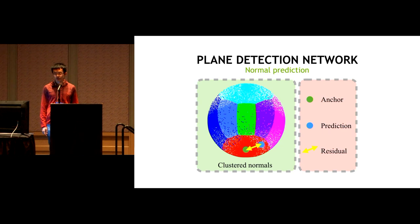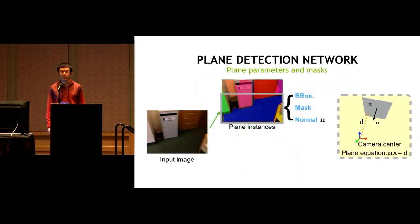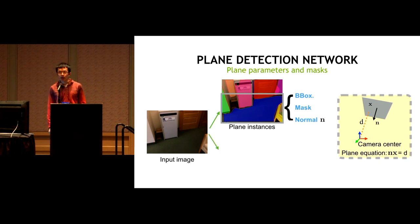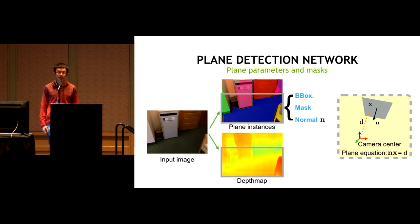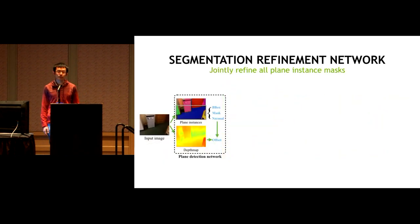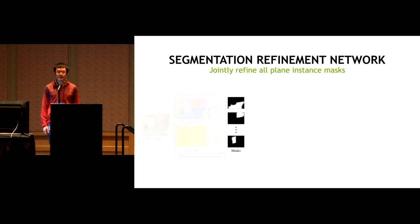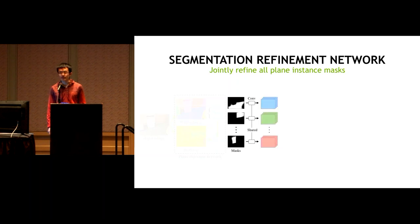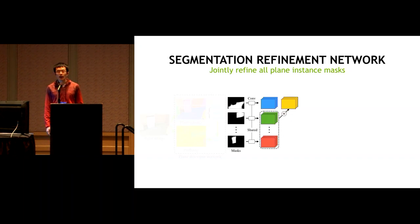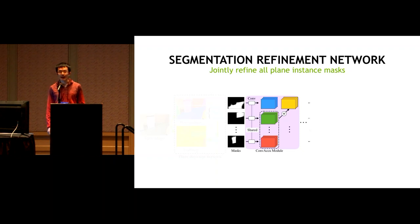The detection network extracts an arbitrary number of planar regions, estimating segmentation masks and surface normals for each. We also use a separate branch for depth map regression to compute the plane offset d. Since the detection network predicts masks independently, we use a refinement network to make masks more consistent in a global frame. We process each mask independently with a convolution layer, sum all other masks' feature maps, concatenate with the current feature map to aggregate global information, and repeat this process to get final refined masks.